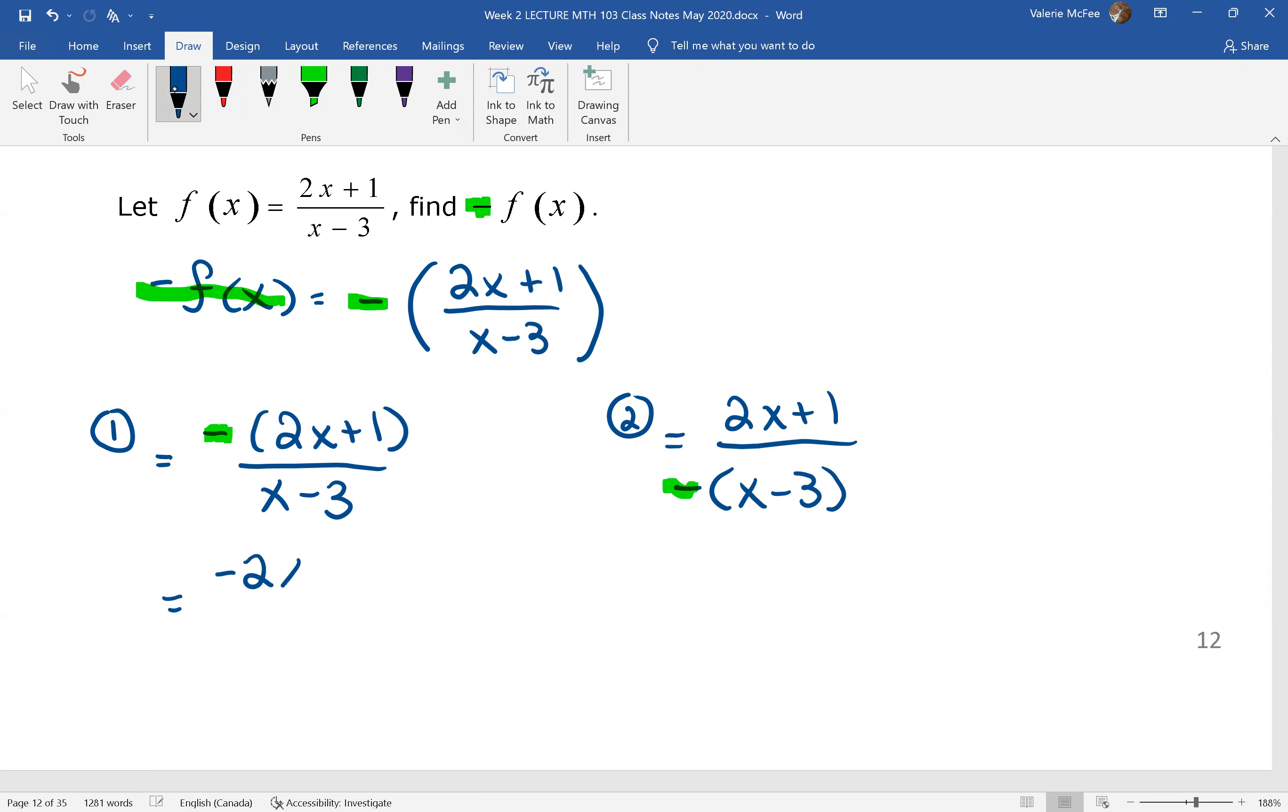In case one, we have negative 2x minus one all over x minus three. And in the second case, I would probably write this as 2x plus one over 3 minus x, just so that negative isn't out in front. You need to recognize when you're checking your answer in a textbook that if you write it like this and the textbook shows you this, they mean the same thing. Be careful about that.